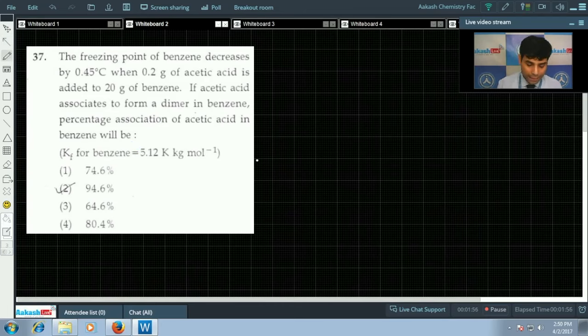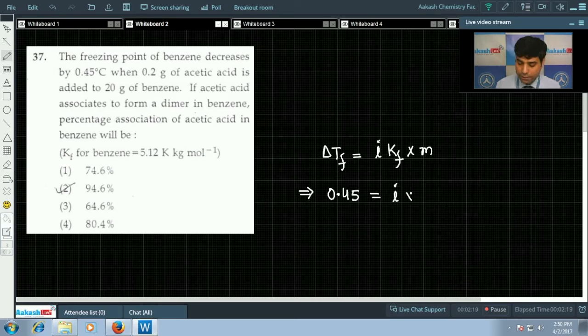As we know, delta Tf is equals to i into Kf into molality. Delta Tf is 0.45 degree celsius, and delta Tf in degree celsius is also equals to delta Tf in kelvin, so it is 0.45 kelvin also. i or van't Hoff factor we don't know. Kf is given 5.12.